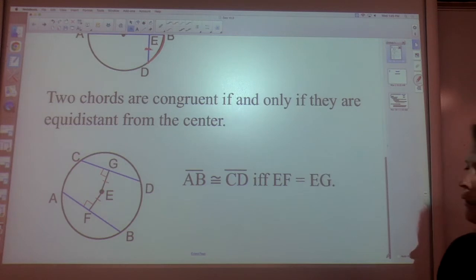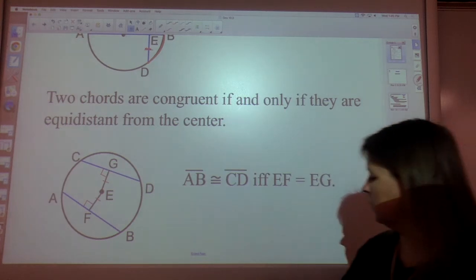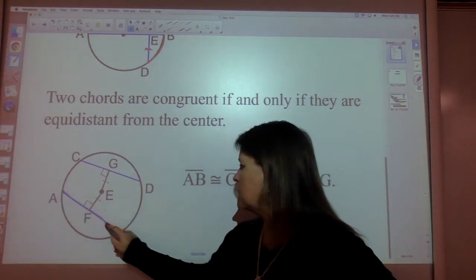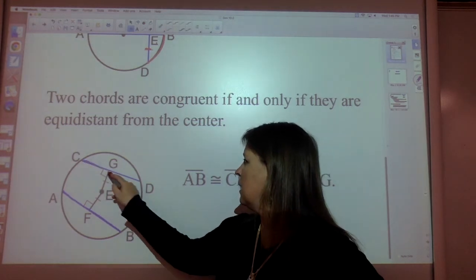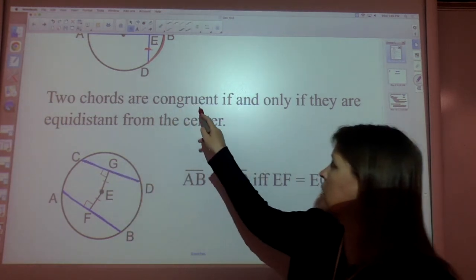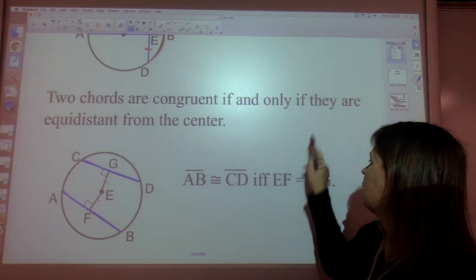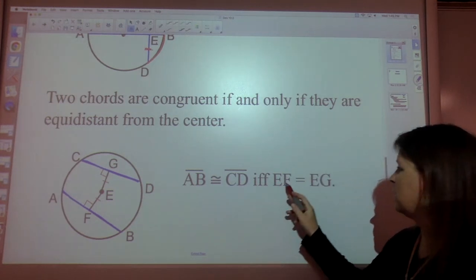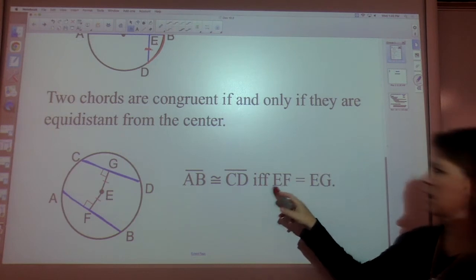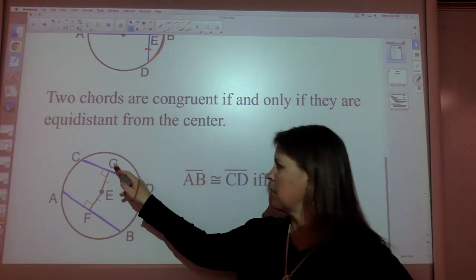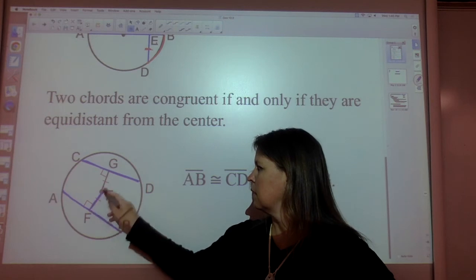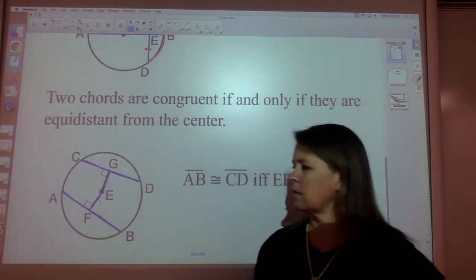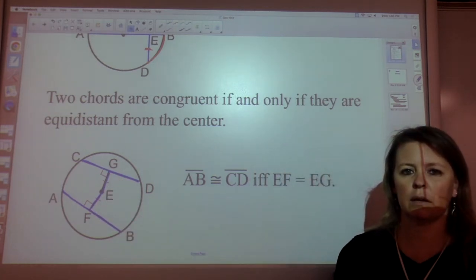Segment AB, and again, you have a lot of drawing to do if you don't have a packet for this. Segment AB is exactly the same size as segment CD. Two chords are congruent if and only if they are equidistant from the center. So notice here we said the measure of segment EF and the measure of segment EG. If that distance is the same as that distance, then we know that they are congruent.